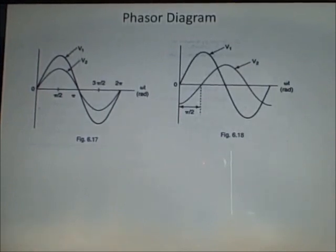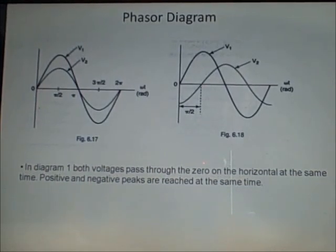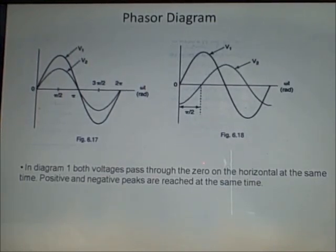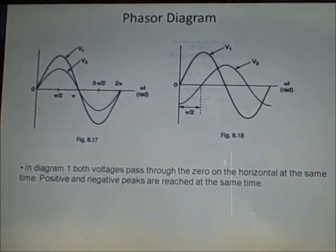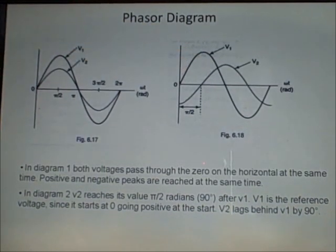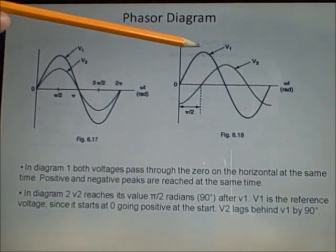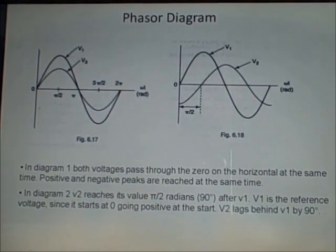If you're using this presentation in conjunction with the slideshow available on the VLE, there are some notes to go hand in hand with it. In diagram one, both voltages pass through zero on the horizontal at the same time, and positive and negative peaks are reached at the same time. In diagram two, however, v2 reaches its maximum voltage after v1 by 90 degrees — we could say that v2 lags behind v1 by 90 degrees, or pi divided by 2 radians.